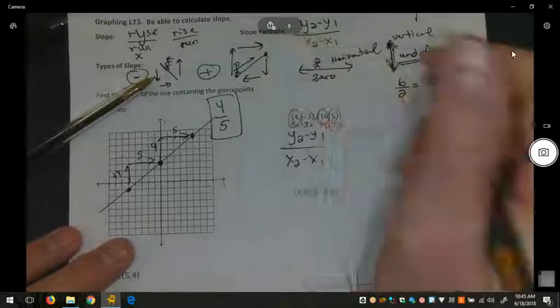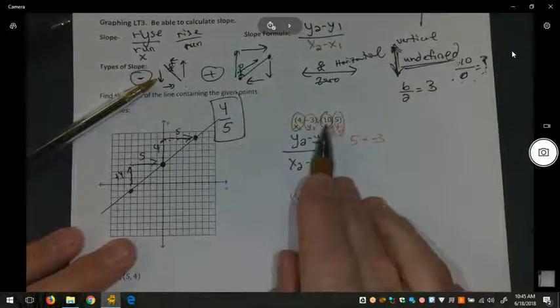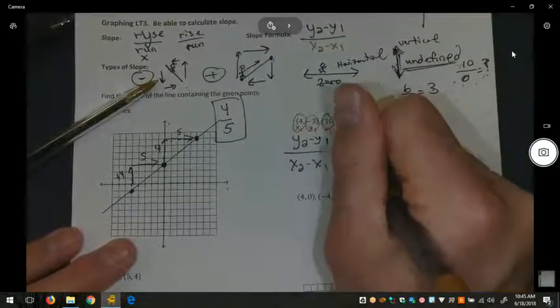The x's are ten and four. Since I start with the second point, I do ten minus four in the denominator.